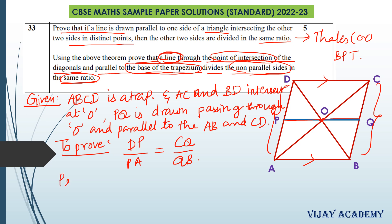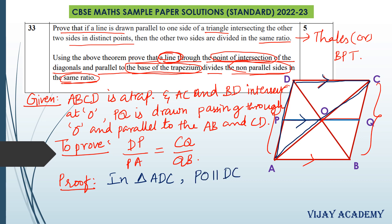Now we can apply the Thales theorem. Let us apply it in triangle ADC first. In triangle ADC, we know that PO is parallel to CD. So we can apply the Thales theorem here, which gives us: DP divided by PA is equal to CO divided by AO. Take this as equation 1.